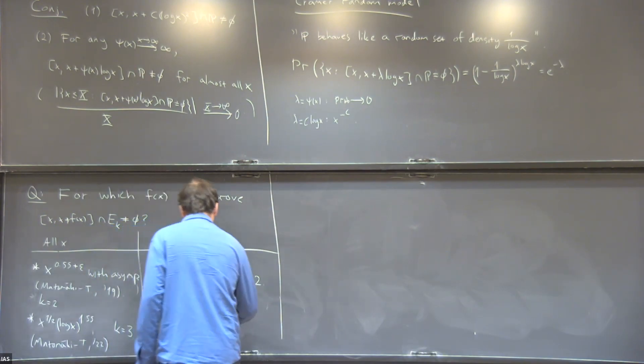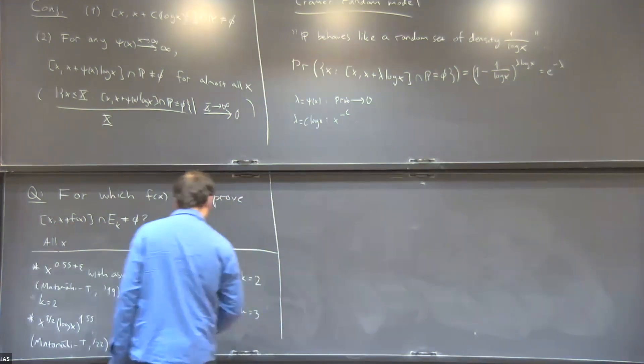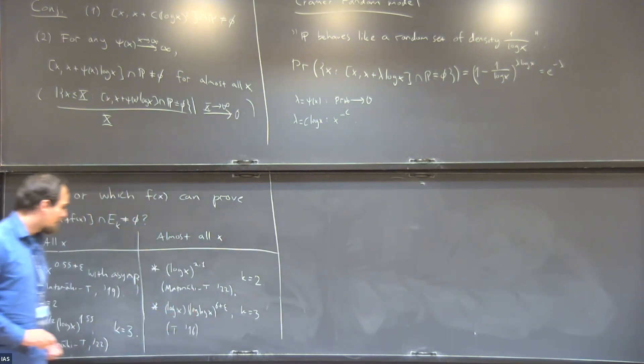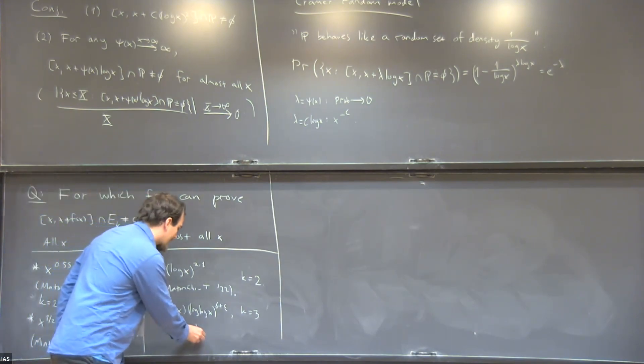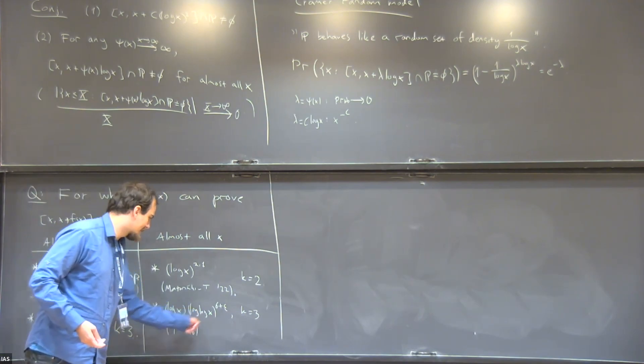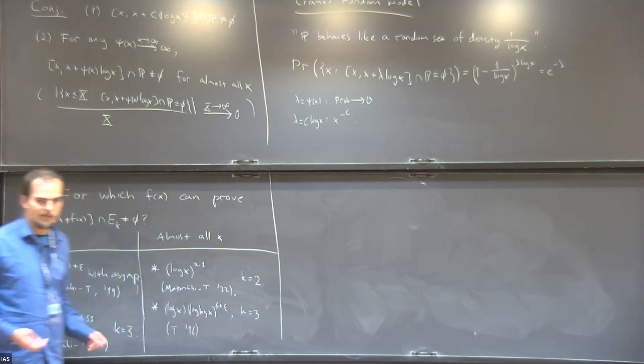You can still ask what about E_3 numbers, can we then get even closer to the predicted interval length? And indeed we can. For E_3 numbers, one can do intervals of length log X times log log X. So up to a double log, it's as good as Cramér's conjecture. If one increases k further, you would get iterated logs here. I prove a theorem that if you have E_k numbers, you can put here a k minus 1 iterated log, so it's getting closer and closer to the predicted interval length.